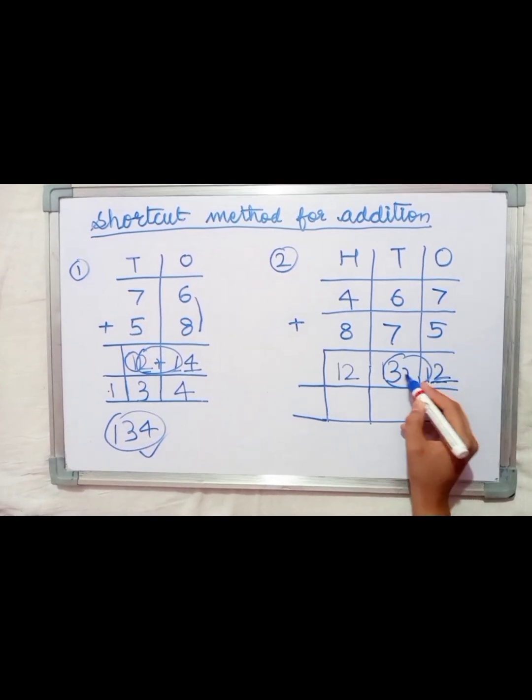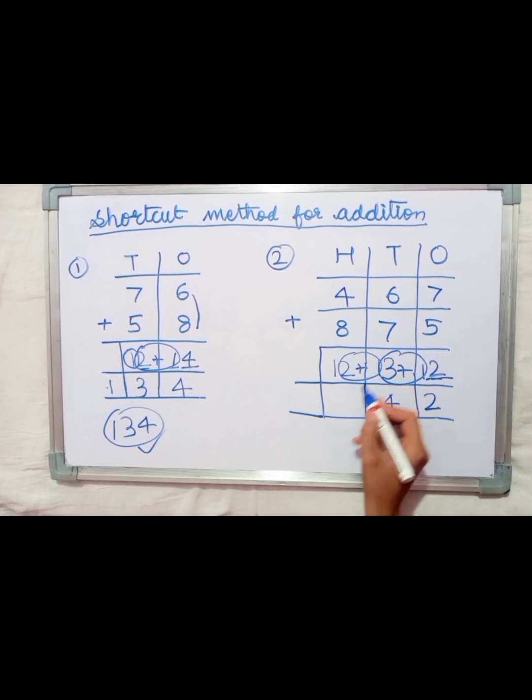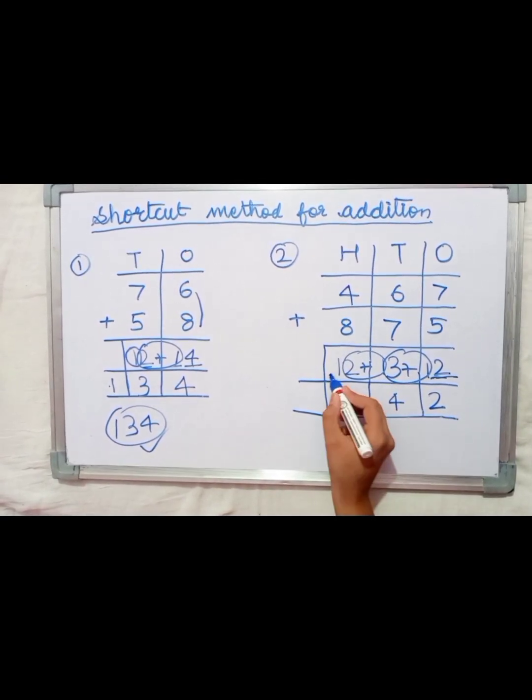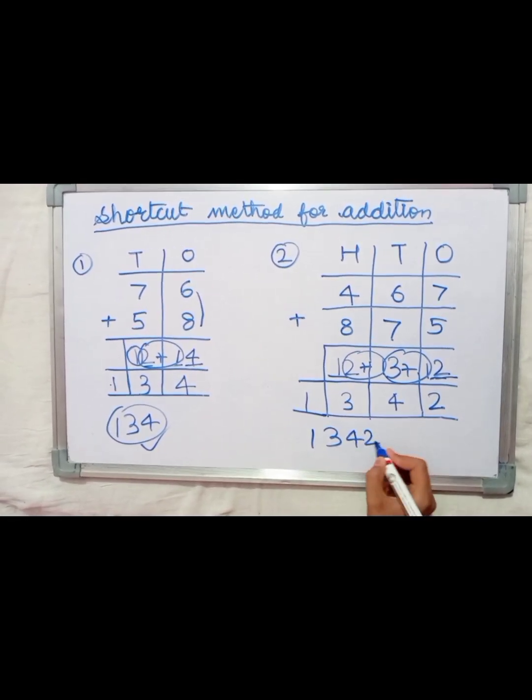3 plus 1 equals 4. 1 plus 2 equals 3. And 1 as is. Our answer is 1342.